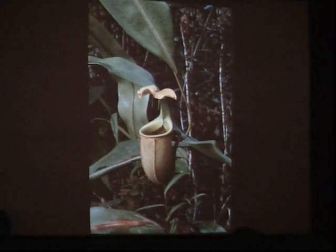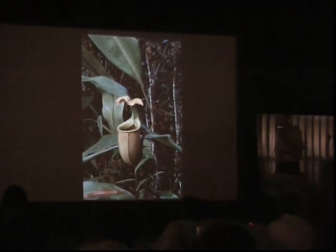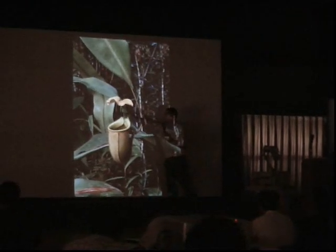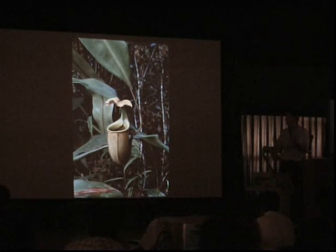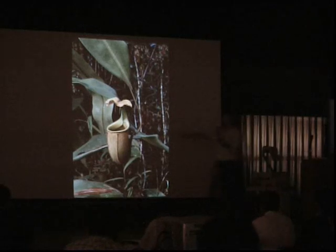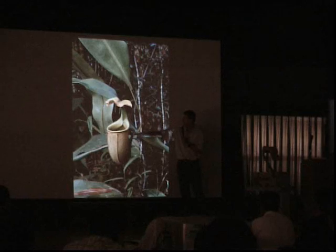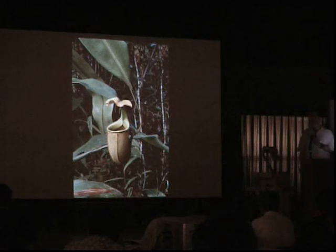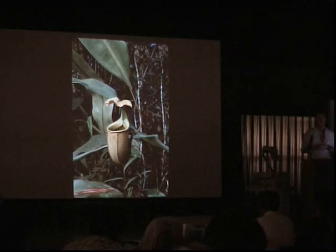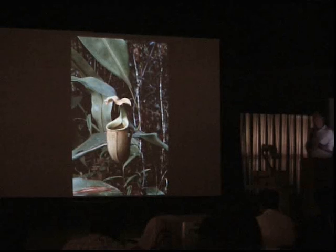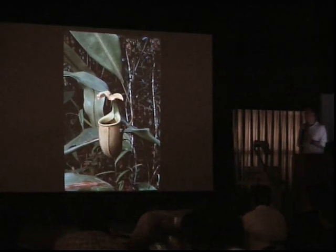I spent a lot of time working on Nepenthes bicalcarata in particular. It's obviously famous because of these two thorns. I spent a lot of time looking at the food web and also a species of ant which nests in the tendrils, which are hollow, and feeds by swimming in the pitcher fluid and pulling out any excess prey items caught by the pitchers. If the pitcher catches too much prey, the whole lot goes putrid, and it can sometimes kill the pitcher, but not the whole plant.